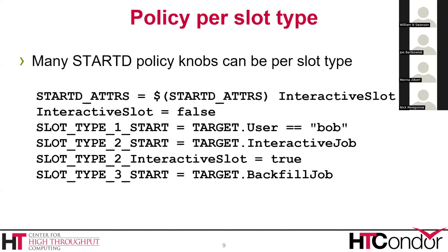The next step of this process is to use multiple slot types, because multiple slot types allow you to specialize a lot of the StartD policy knobs per slot type. You can have a separate start expression for each slot type, though not for each individual slot. So you can say something like StartD adders is a global — I want to add an attribute to every slot. I want that attribute to be interactive slot name with a default value of false, but for slot type 2, the value should be true. Now I have declared slot type 2 is an interactive slot type. We would also say it only matches interactive jobs, and I want to bind specific GPUs to that slot.